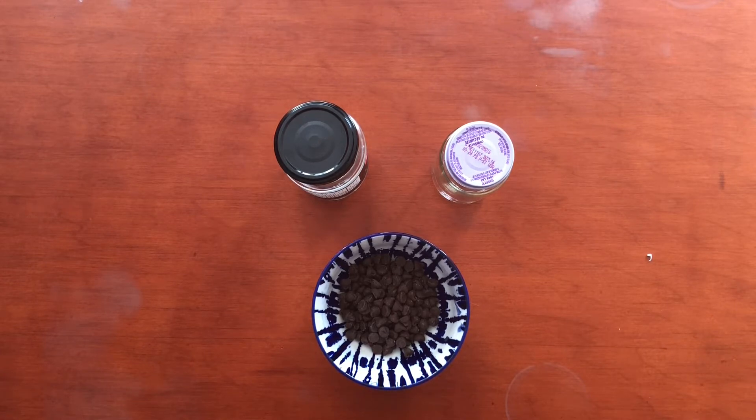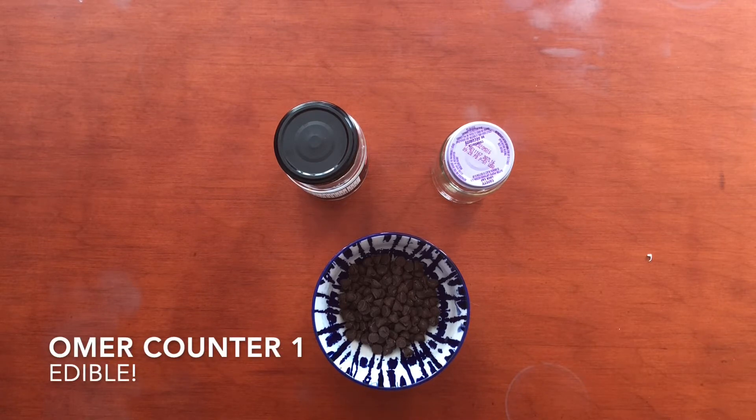There's all sorts of counters that you can do from coloring pages to sliding beans on pipe cleaners. I may or may not have some of those to show you at the end. However, one of my favorites is, of course, the edible Omer counter.